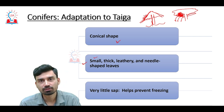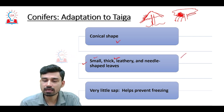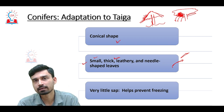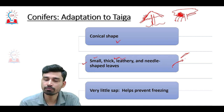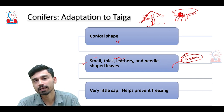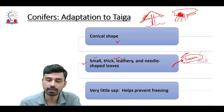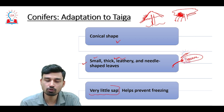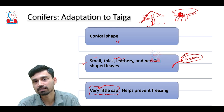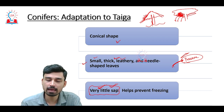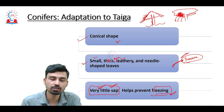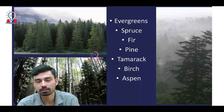The second characteristic of coniferous trees is their leaves — very small, thick, leathery, and many times needle-shaped. Since the Taiga is a dry climate, these leaves help coniferous trees to preserve water for use during dry conditions, allowing them to survive even the harsh dry winter. The third characteristic is that these trees have very little sap — the liquid substance inside trees — and having very little sap helps prevent freezing during the cold dry season.